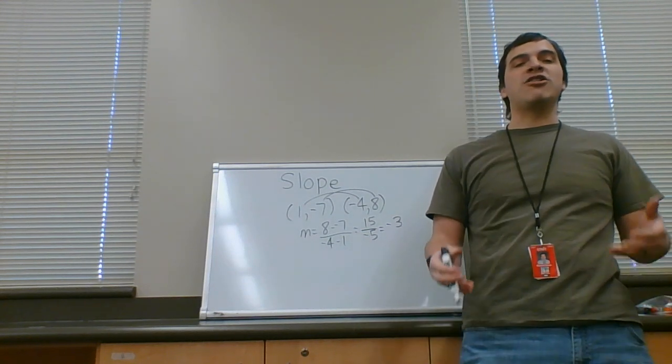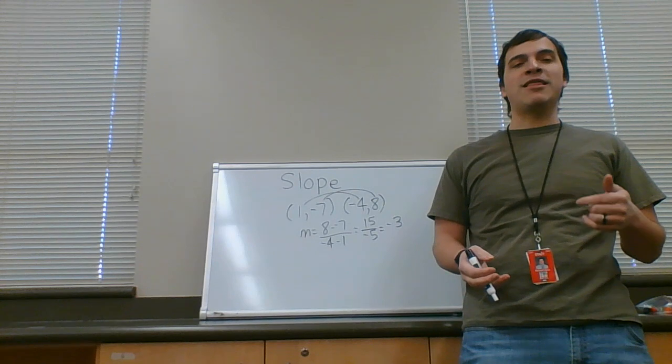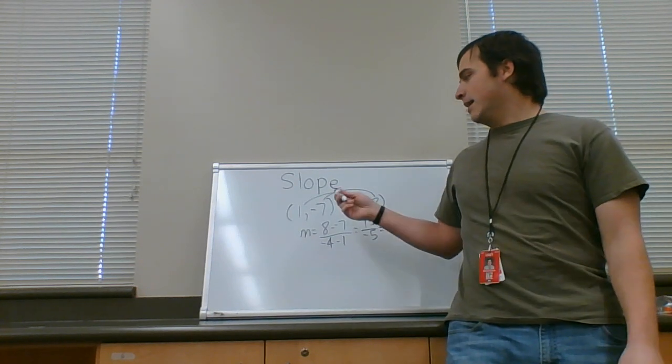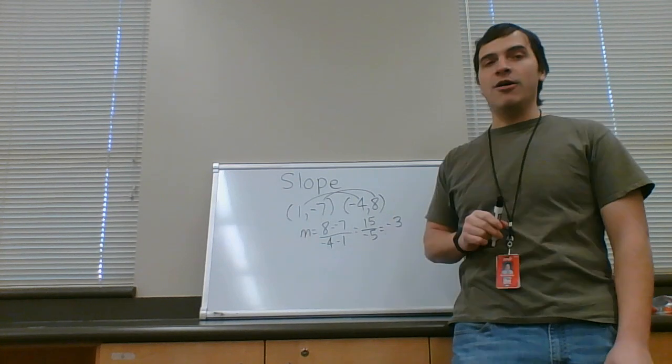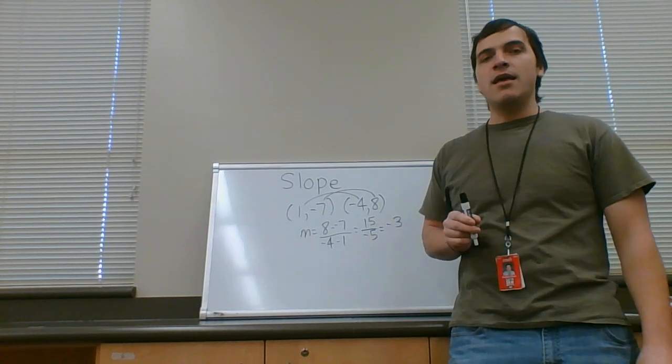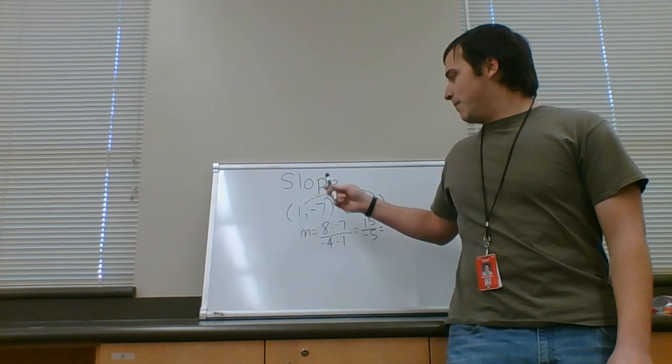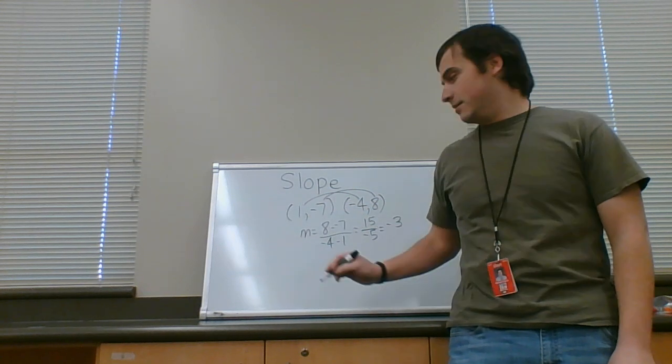Now, to write the equation of the line, we're going to do the same method we just did, because now we need a point. It doesn't matter which point you pick. And a slope. We have a slope. So, I'm just going to pick the first one, because why not?